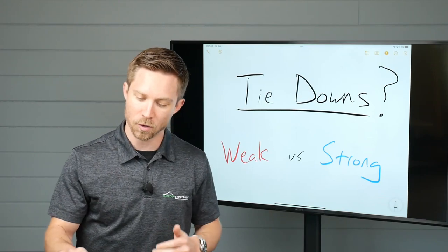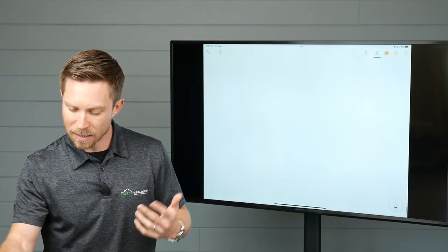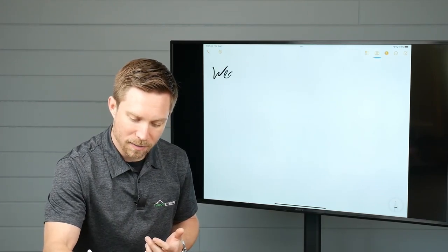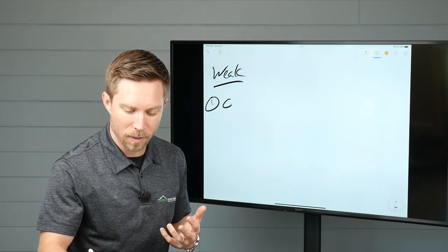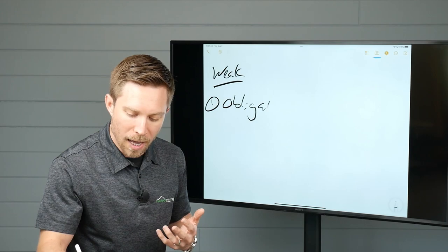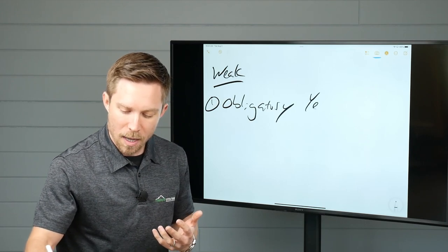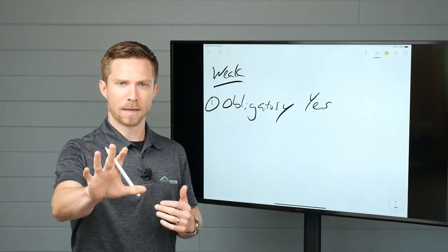We're going to talk tie downs, weak versus strong. Let's first hit the weak. This is, here we go, weak tie downs. These are what I'll classify as the obligatory yes. So a lot of times people will use questions like this. Here's an example.